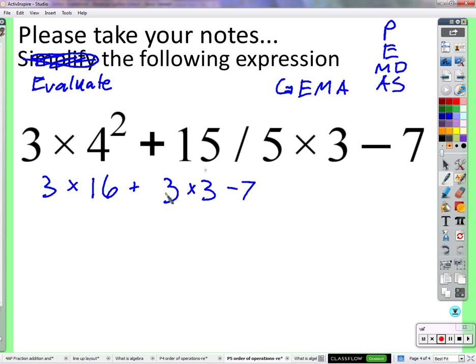Now we have some multiplication here, some multiplication there, some addition. Are we going to add 16 plus 3 and get 19? No, that's not the order we're going to use. We multiply first. 3 times 16 is 48, plus 3 times 3 is 9, minus 7. Alright, 48 plus 9 is 57, minus 7. 50!